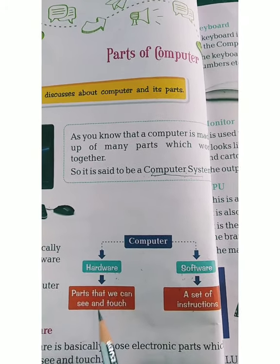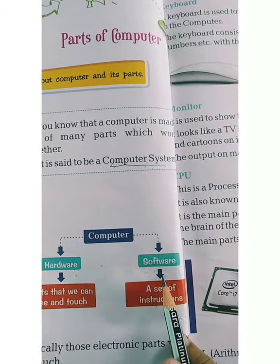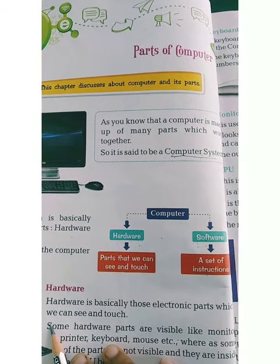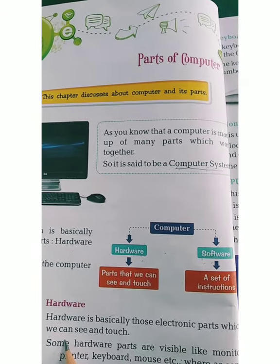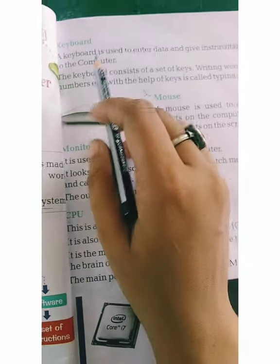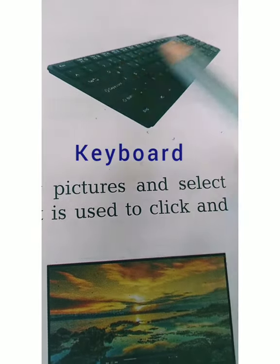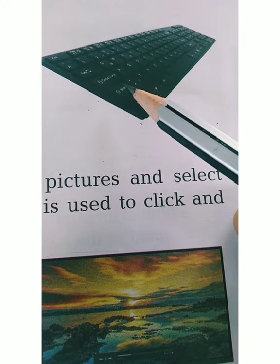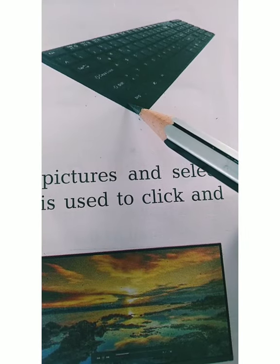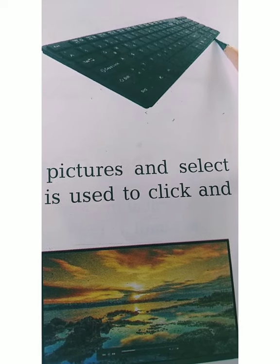An example of hardware which we can see is the Keyboard. This is a keyboard structure. There are many alphabets and numbers on it. These buttons are called keys, and together the device is called a Keyboard.